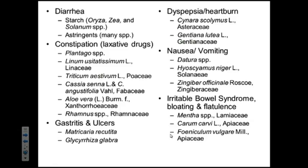How about Zea? I'll give you a species — Zea mays. Corn. Which family? Poaceae — it's a grass. How about Solanum? Potato. Which family? Solanaceae. You guys are getting it.